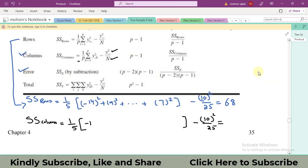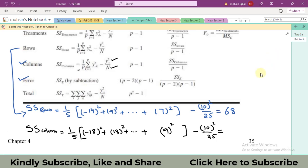So write here minus 18 whole squared plus 18 whole squared then three dots and after that 9 whole squared and this is equal to 150. Now we are only left with sum of squares of the error.